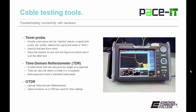Now let's talk about some cool and rather expensive pieces of equipment. There is the TDR — the time domain reflectometer. It's a cable tester that can also give you the length of a segment and tell you where there is a break in a segment. They're much more expensive than your standard cable tester. Then there's the OTDR — the optical TDR — which has the same functions as the basic TDR but is used for fiber optic cabling.